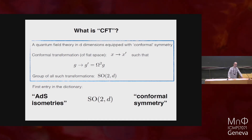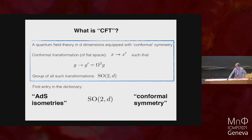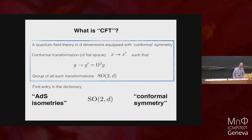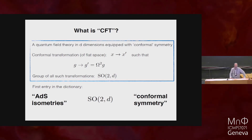We have now essentially met — at least heuristically — the first entry in this dictionary: someone might say ADS isometries, and someone else might say conformal symmetry of flat space, but they are referring to precisely the same object, namely SO(2, d).